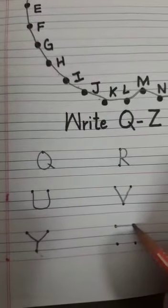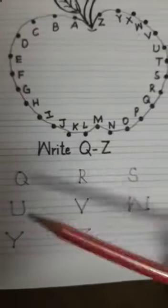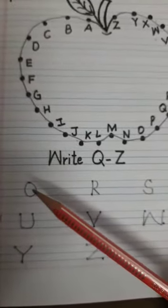Sleeping line. Then slanting line. Then again sleeping line. In this way you have to write alphabet Q to Z.